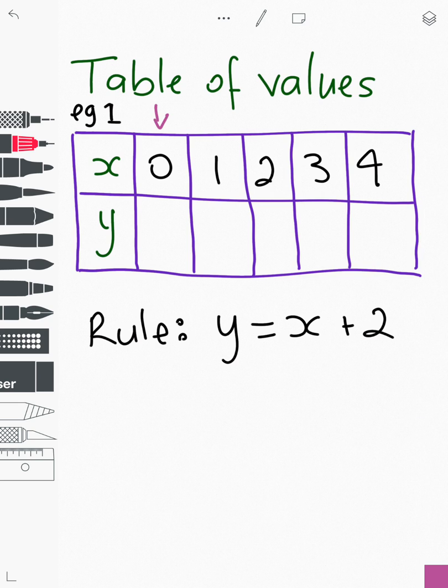So we can simply put that into the formula and say y equals 0 plus 2. What I've done here is where the x is, I've substituted the value that's in that column there. So y equals 0 plus 2, which equals 2. So there we've simply put the 2. Now let's move on to the second column. x equals 1, so y equals 1 plus 2, which equals 3.